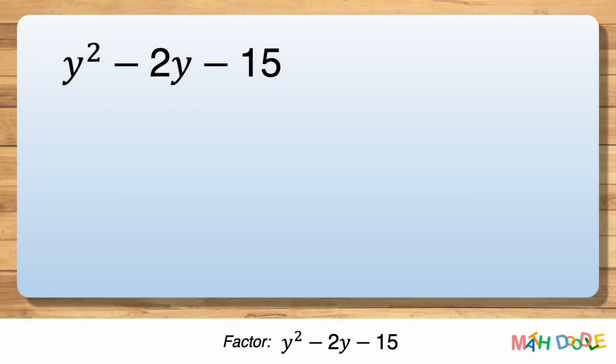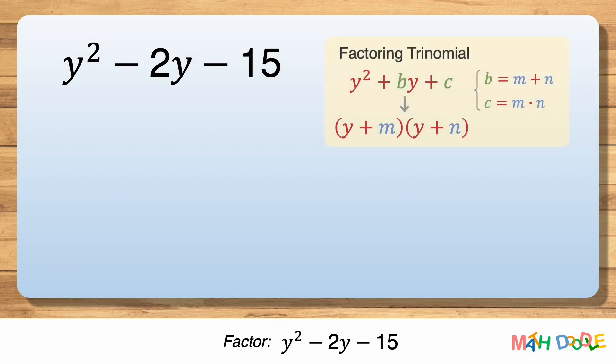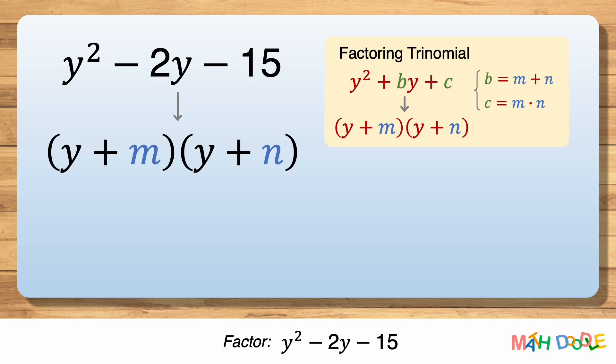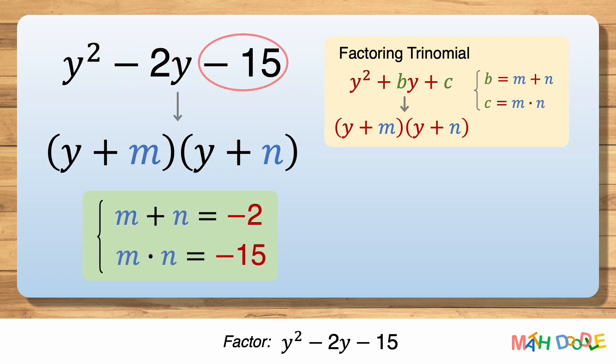To factor this trinomial, let's use this property as a guide. To transform this trinomial into the form of (y + m)(y + n), we must find the values of m and n. We know m plus n is minus 2 and m times n is minus 15. So our goal is to find two numbers that add to minus 2 and multiply to minus 15.